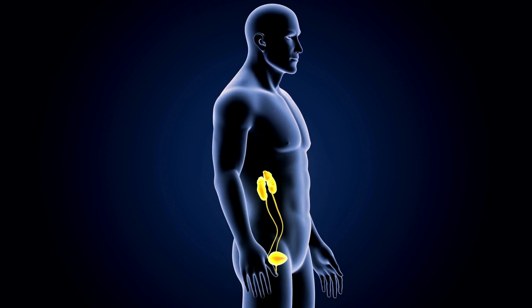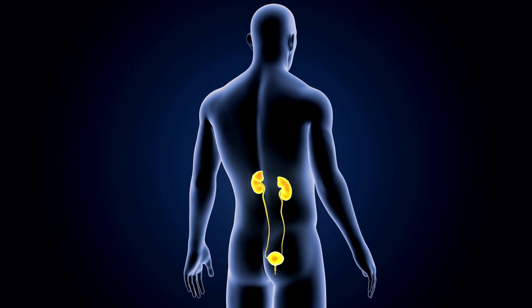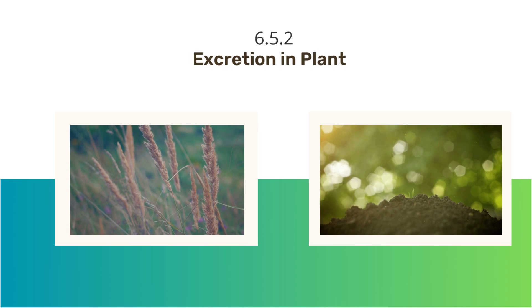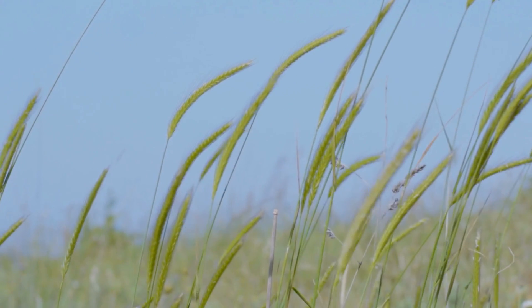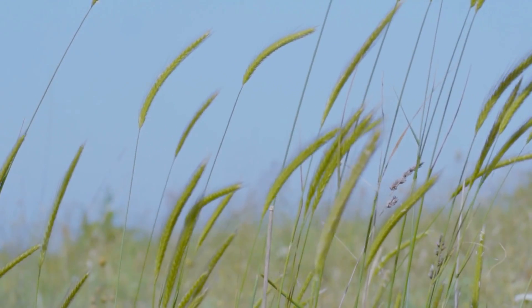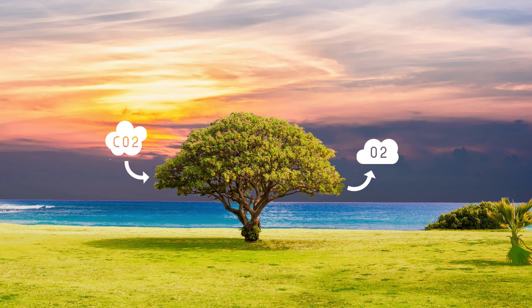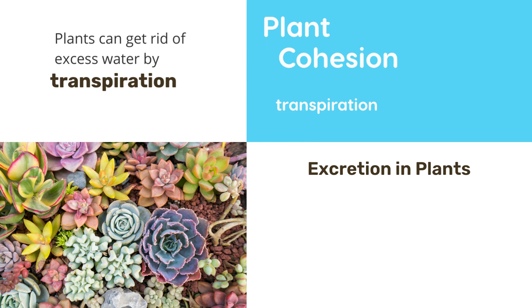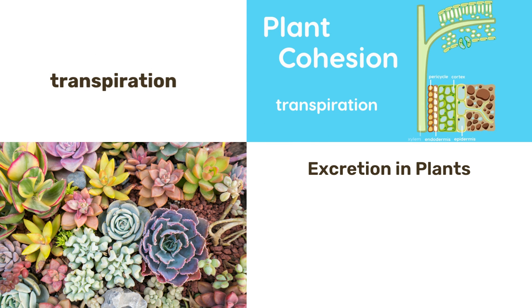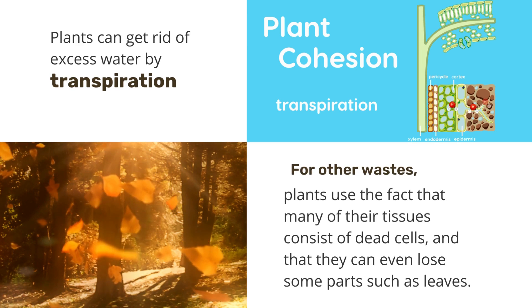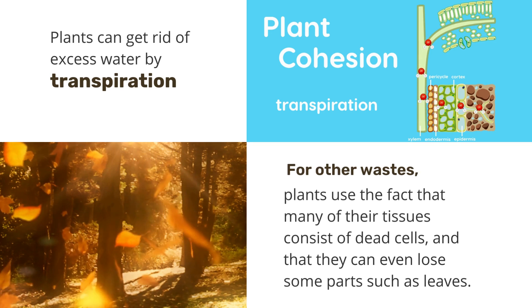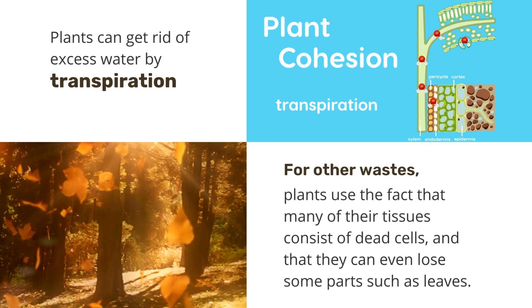That was excretion in human beings. Let's move on to our next topic, excretion in plants. Plants use completely different strategies for excretion than those of animals. Oxygen itself can be thought of as a waste product generated during photosynthesis. We have discussed earlier how plants deal with oxygen as well as carbon dioxide. They can get rid of excess water by transpiration. Plants also use the fact that many of their tissues consist of dead cells and that they can even lose some parts such as leaves.